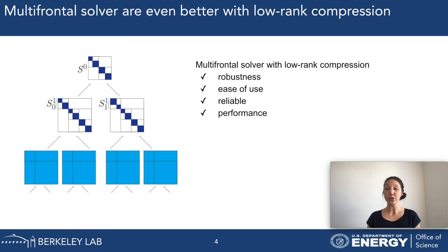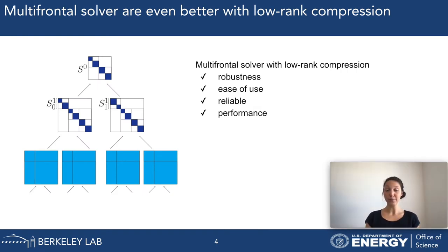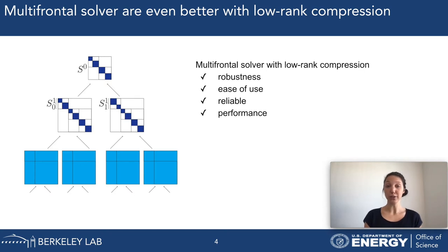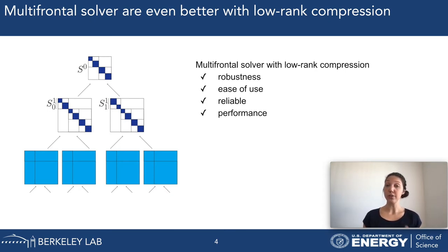I focus in particular on the multifrontal solver with low-rank compression. That means some of these frontal matrices of the assembly tree will be compressed using low-rank compression. Higher in the tree, where the matrices are usually larger, these matrices will be compressed.